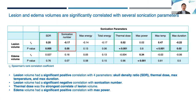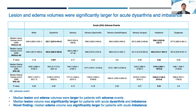We also found a significant positive correlation between edema volume and max power. We analyzed lesion and edema volumes with respect to eight adverse events. While median lesion and edema volumes were all larger for patients with adverse events, median lesion volume was significantly larger for patients with acute dysarthria and acute imbalance. A novel finding was that median edema volume was significantly larger for patients with acute imbalance.